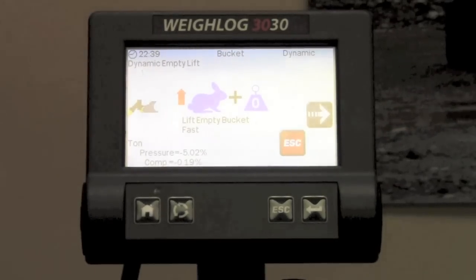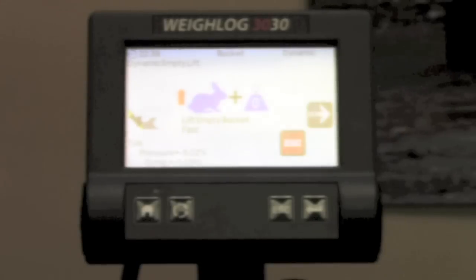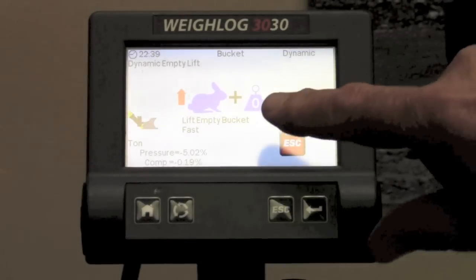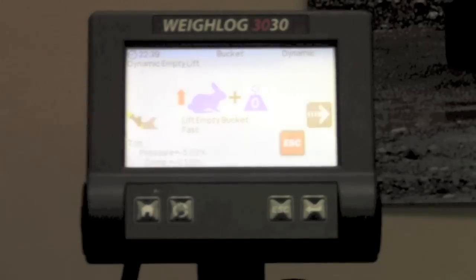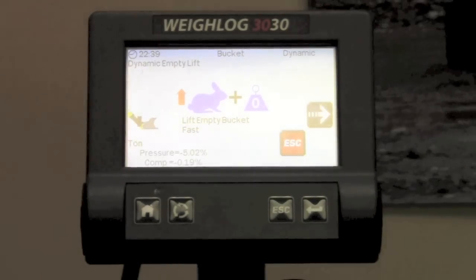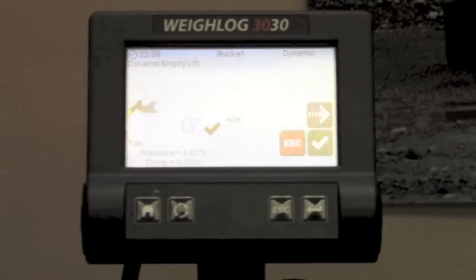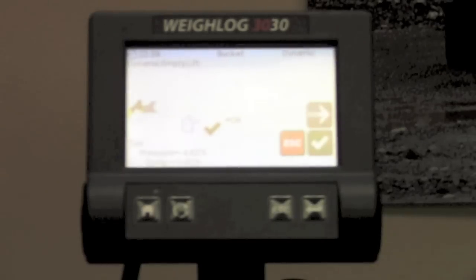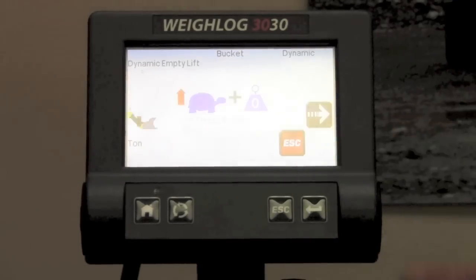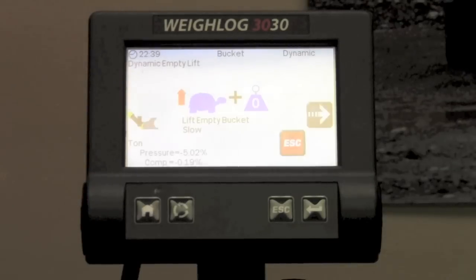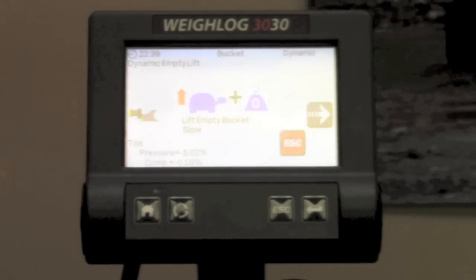Once we've done the full lifts, dynamic lifts, it is asking us for the empty dynamic lifts. It is the exact same procedure except at this point we would not have any load on the bucket whatsoever. And we do a fast lift and then we do a slow lift. Again, this is with no material in the bucket.